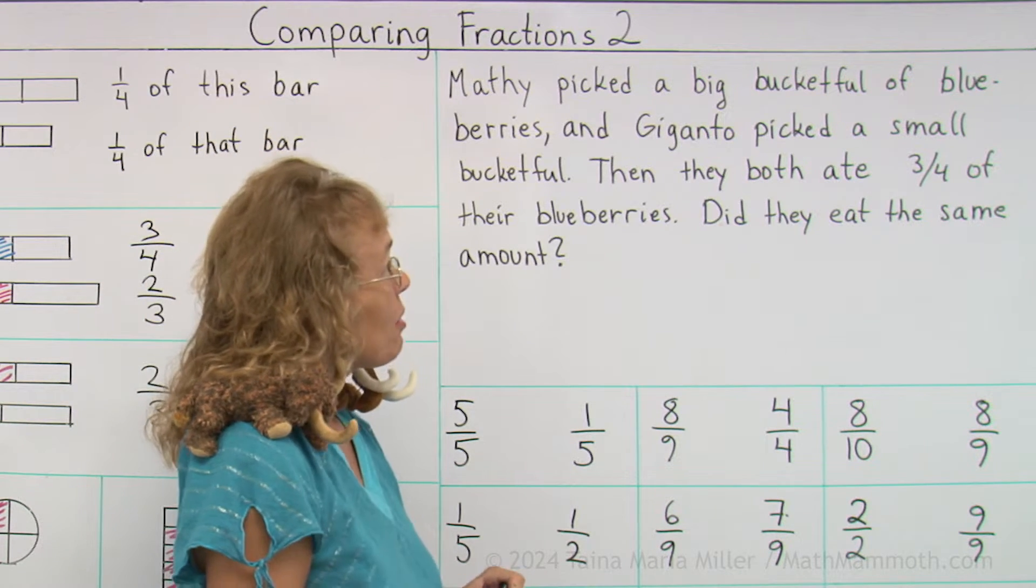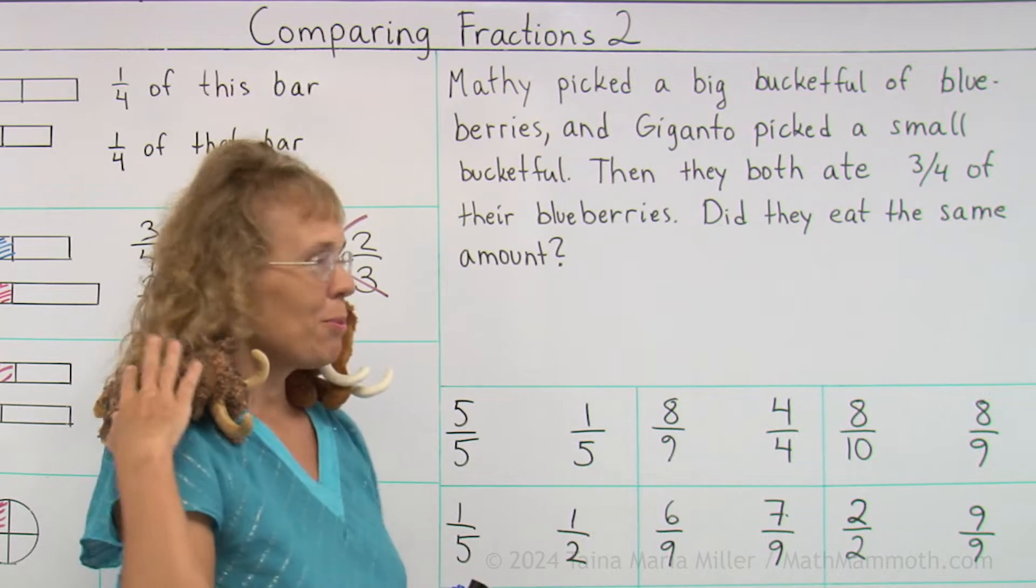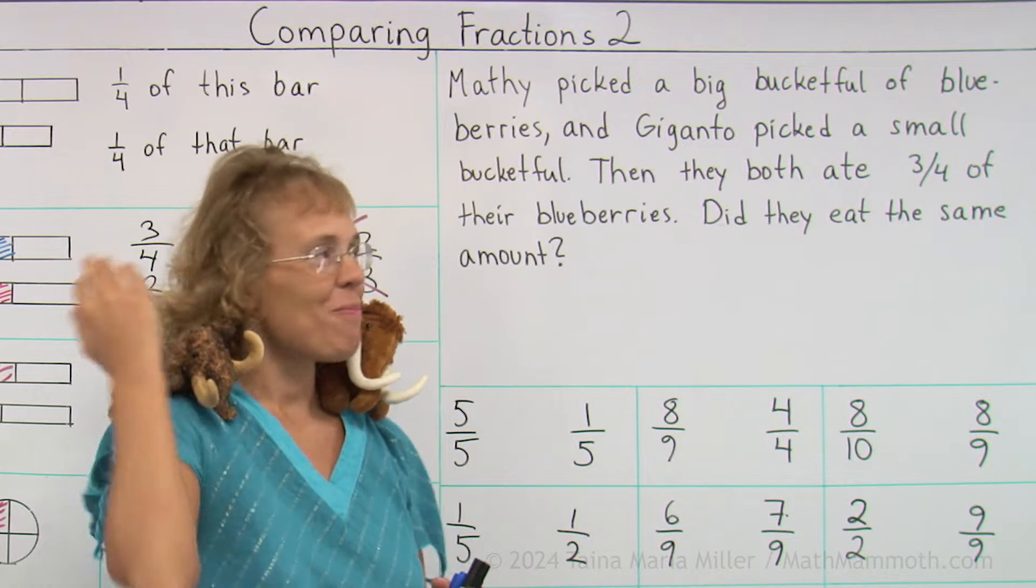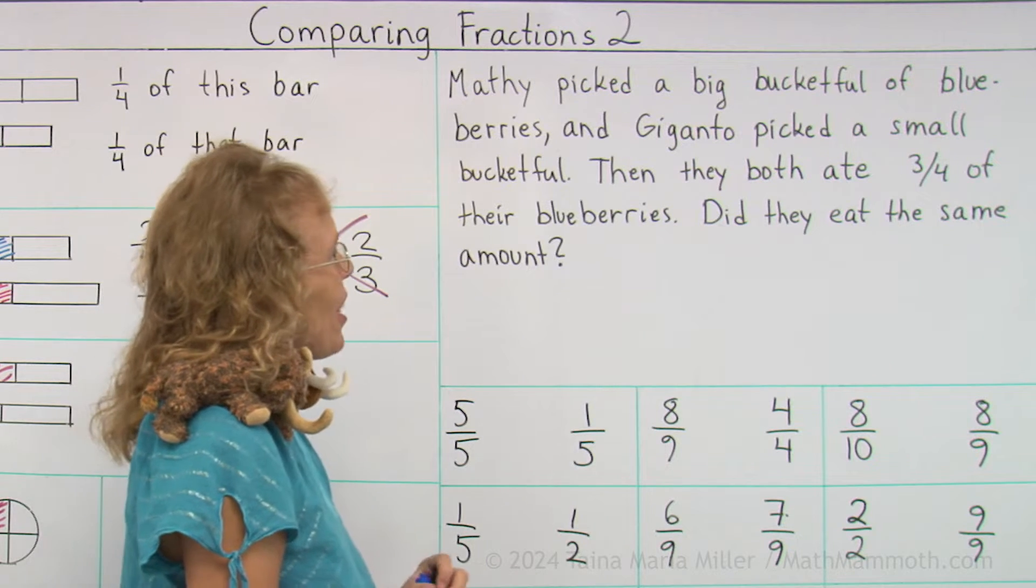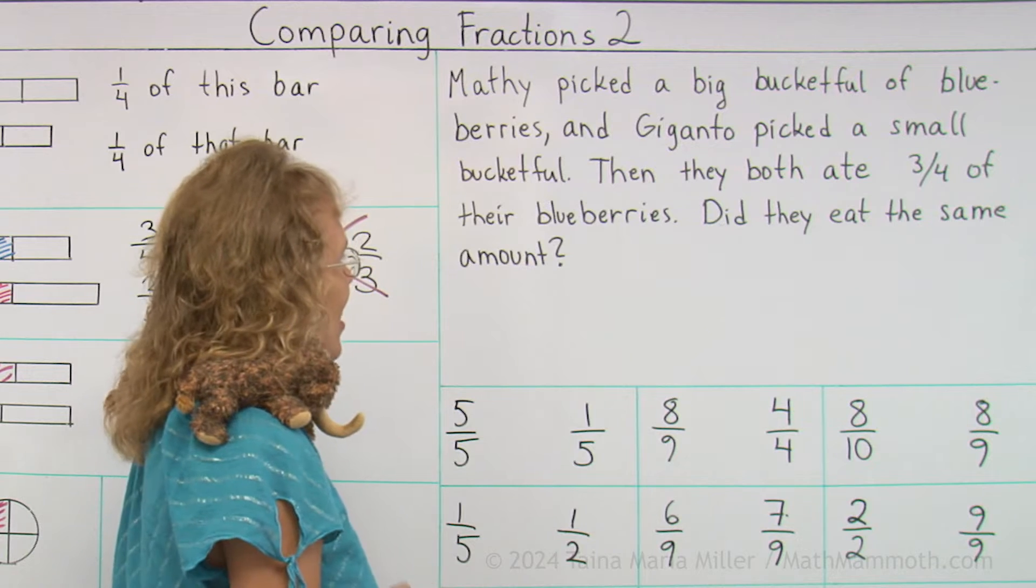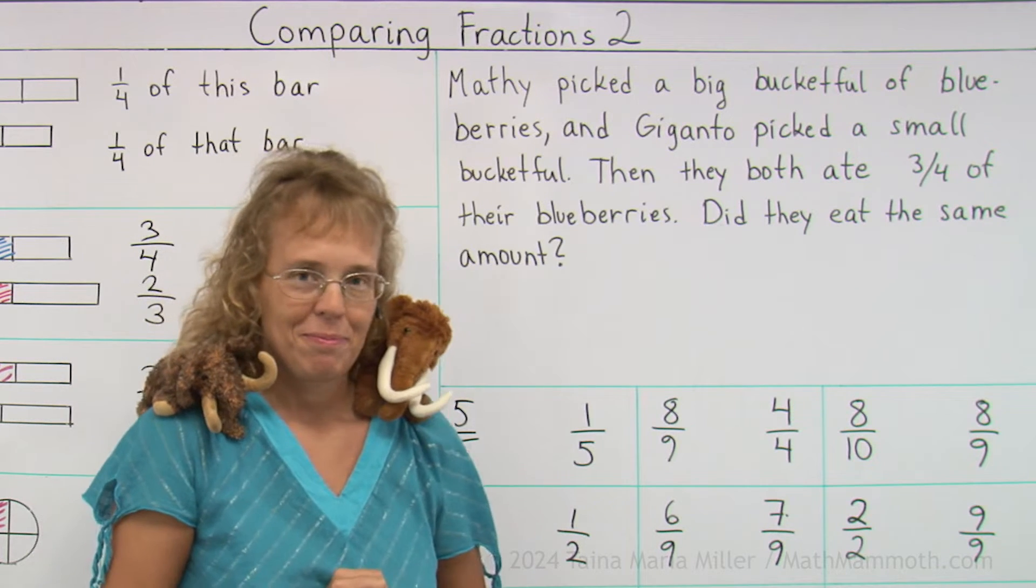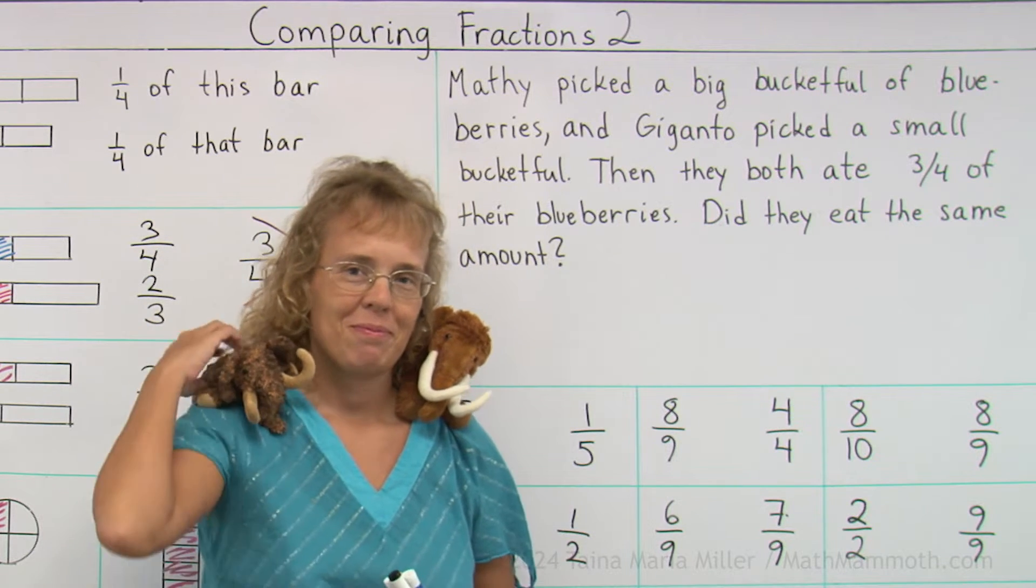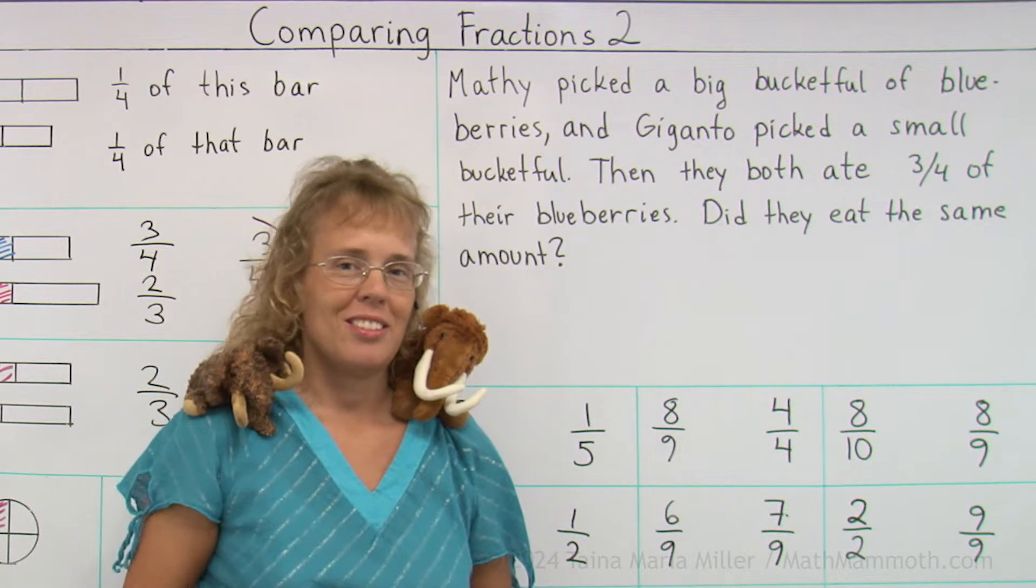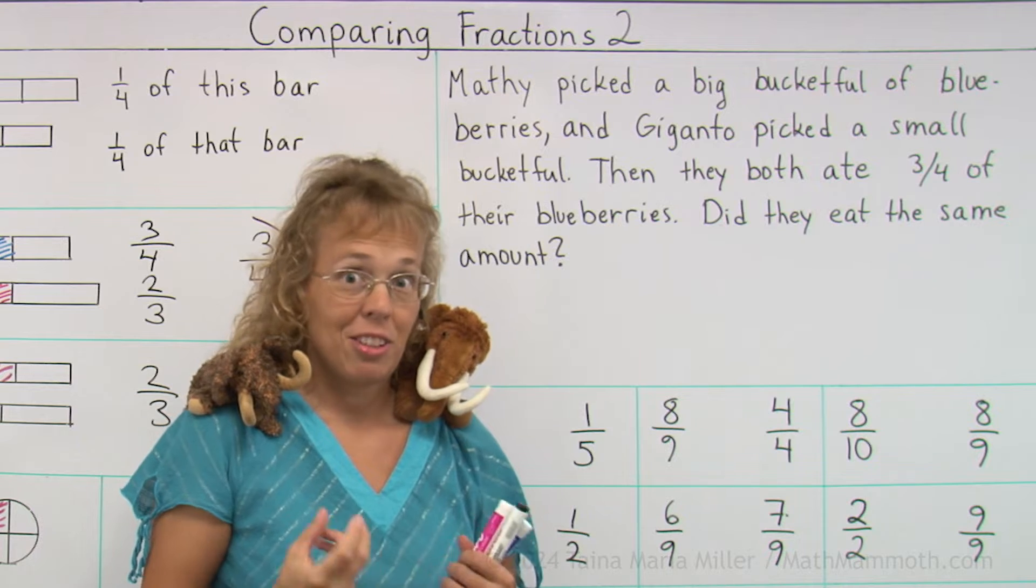Let's read. Matthew picked a big bucket full of blueberries, and Giganto picked a small bucket full of blueberries. Okay, yeah, because he's smaller. Then they both ate three-fourths of their blueberries. Did they eat the same amount? What do you think? He has a small bucket full, he has a big bucket full, and they ate three-fourths.